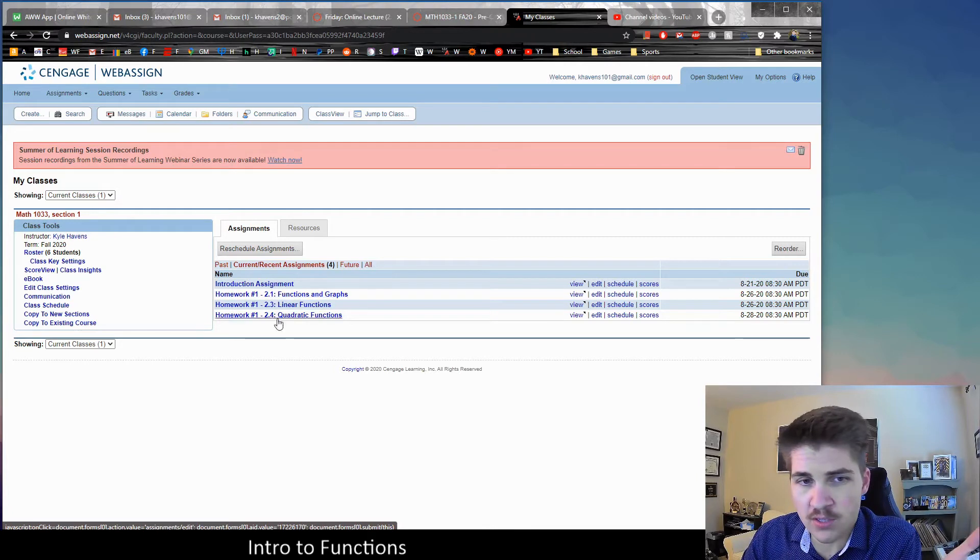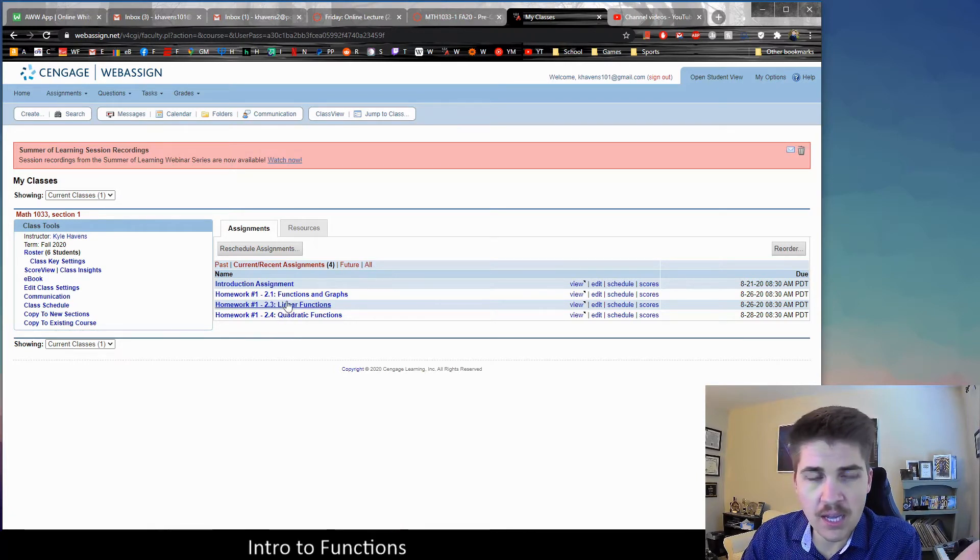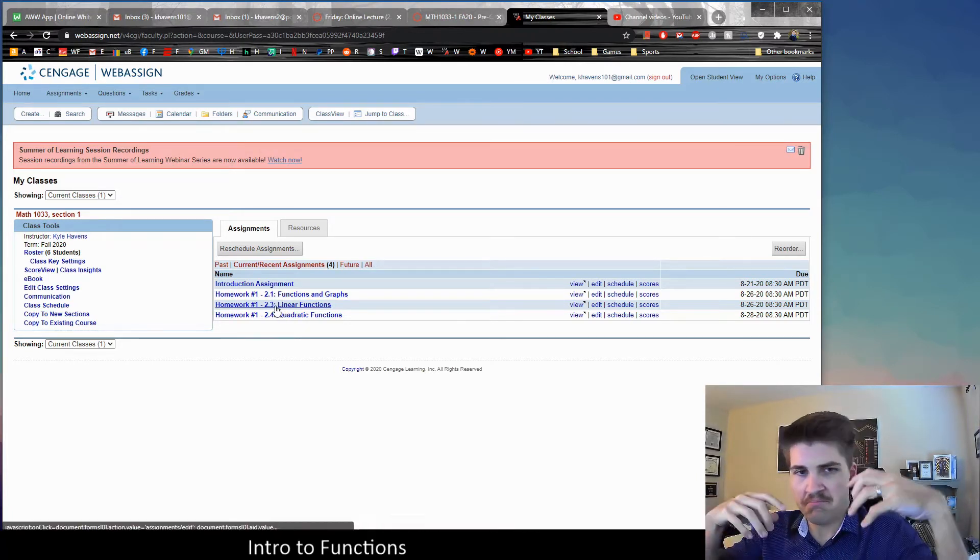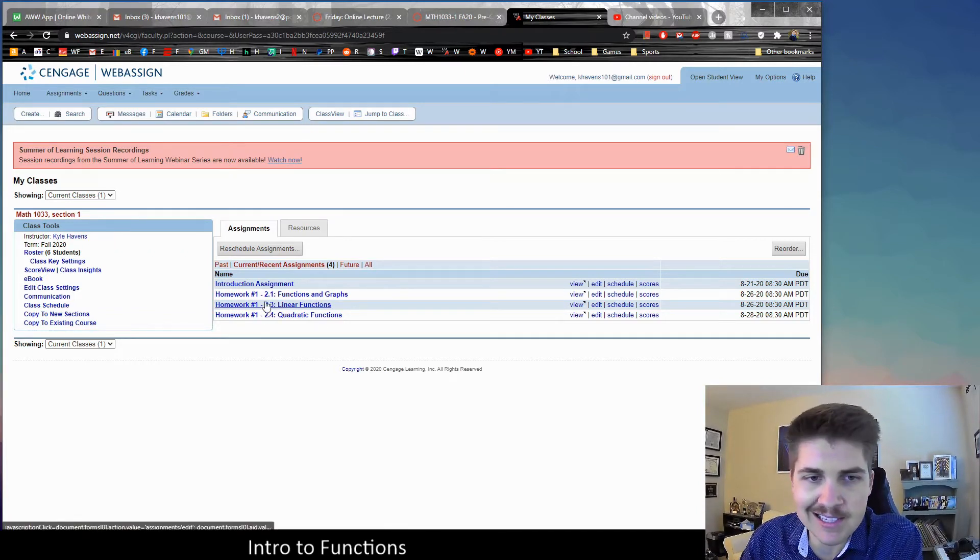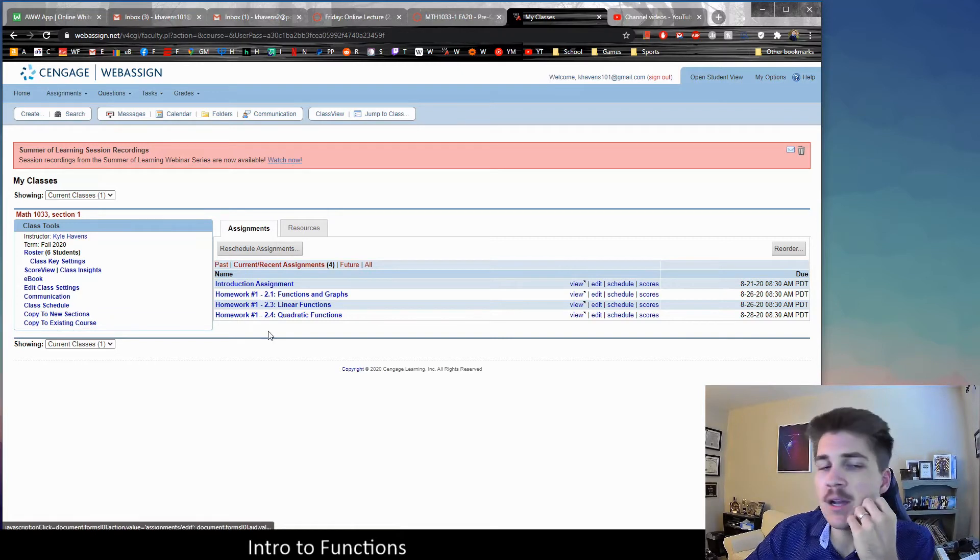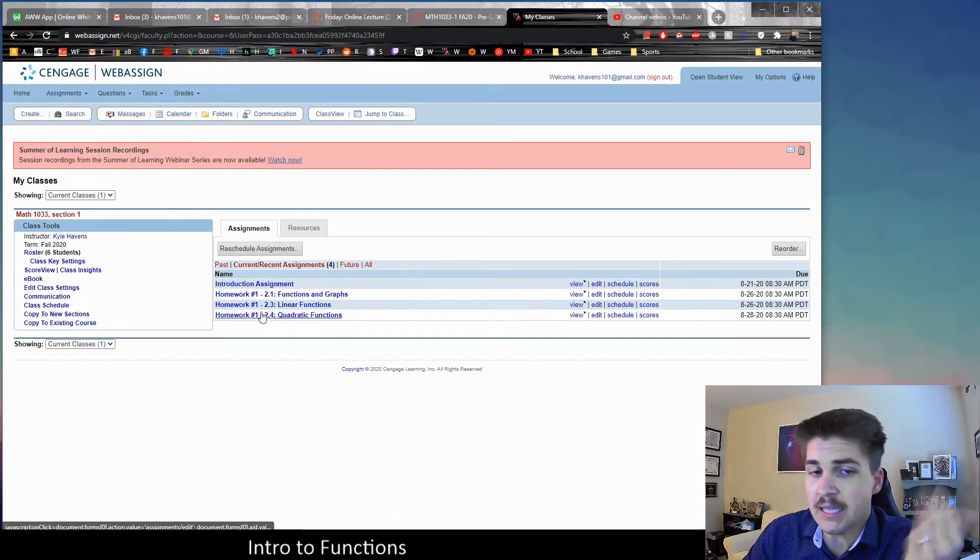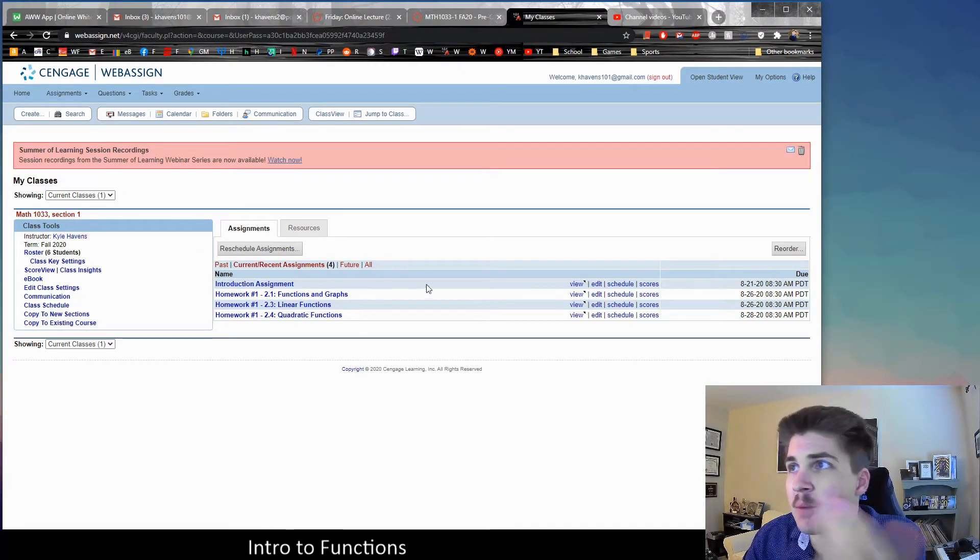That's why it says homework 1, 2.1, 2.3, 2.4. But basically, that usually would have been just homework set 1. You can kind of ignore that. It doesn't really have meaning anymore, aside to me. My point here was,